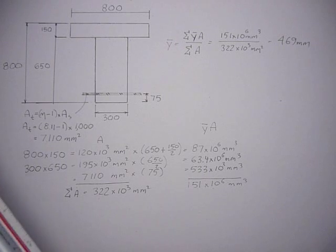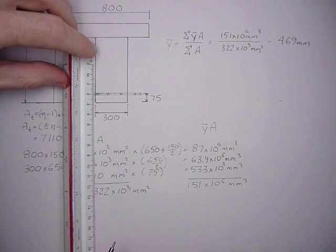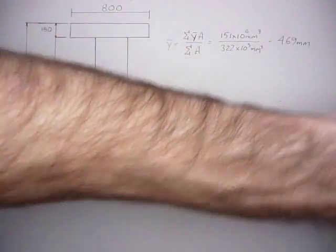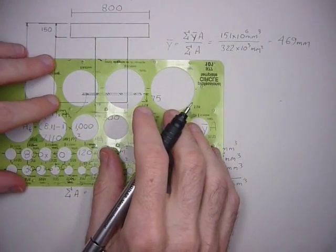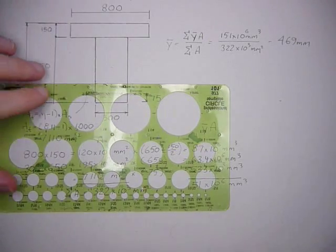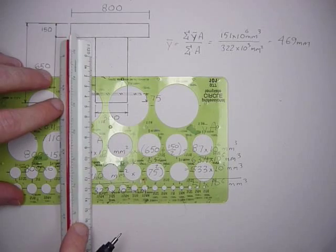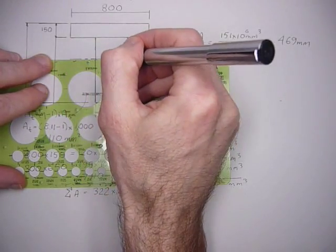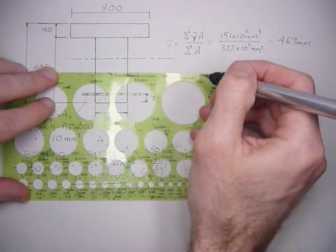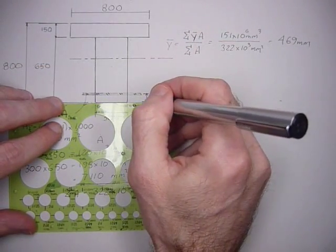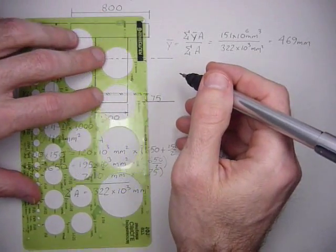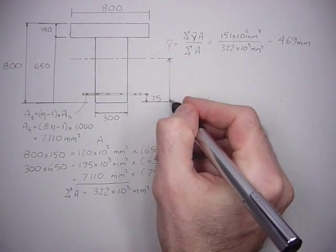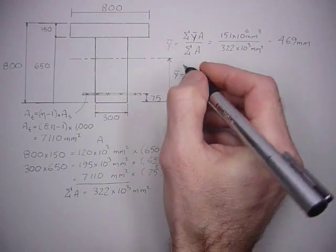If I take the scale here at 1 to 125, 470 approximately, that's here. So that's going to be about here somewhere. We'll dimension it here. This is the Y bar distance, and it is 469 millimeters.